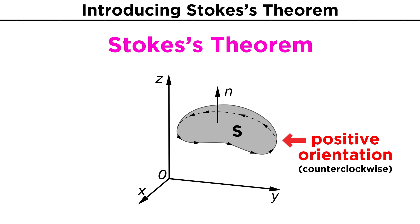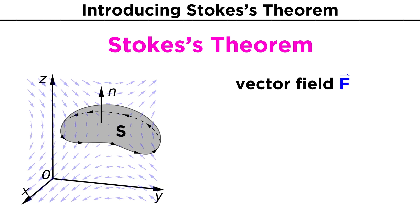Just as with Green's Theorem, we assume that the curve is positively oriented, which means the path of the curve goes in the counterclockwise direction with respect to the normal vector of the surface. Now if we have a vector field permeating space, to find the amount of the field that goes in the direction of the curve, we would need to take the line integral of F along C.